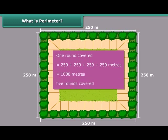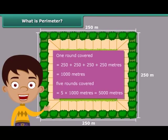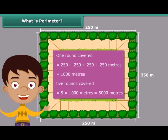Therefore, in five rounds, you covered 5 into 1,000 meters — that is 5,000 meters or 5 kilometers. Now you are ready to answer your mother's question. In this calculation, we used the concept of perimeter when we worked out the distance you covered in one round.